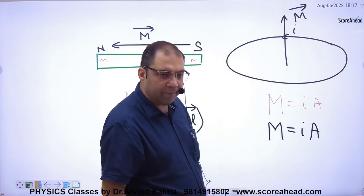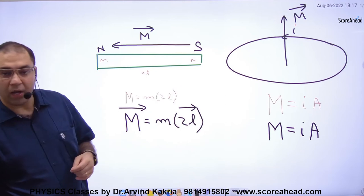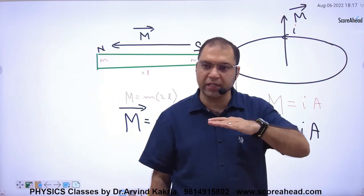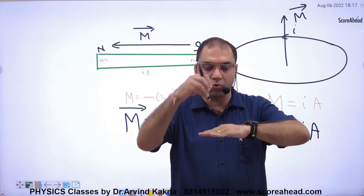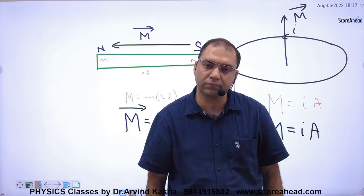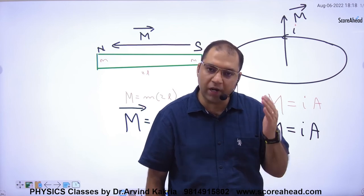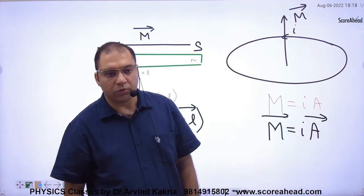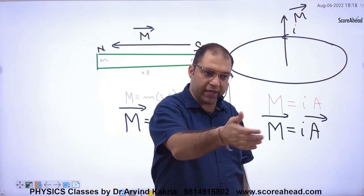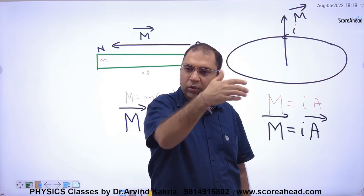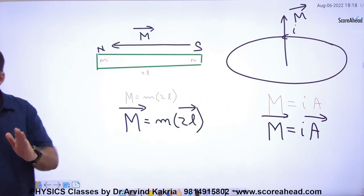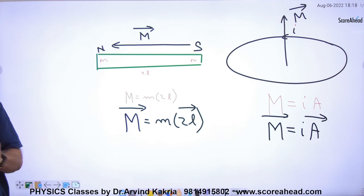Capital M points upwards in this case. Similarly, the area vector of the loop is perpendicular to the plane of the loop. To decide its direction, use the same right-hand rule: curl the four fingers with the current, and the thumb gives the area vector direction. So the direction of M and the area vector are the same. These are two different concepts but follow the same rule.